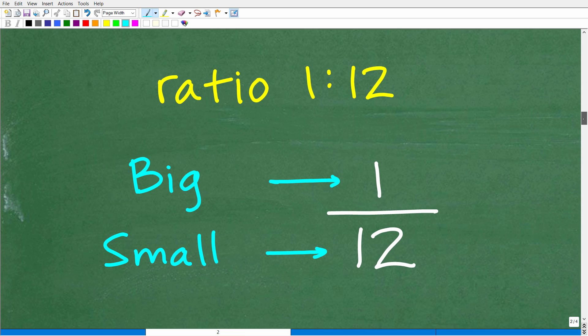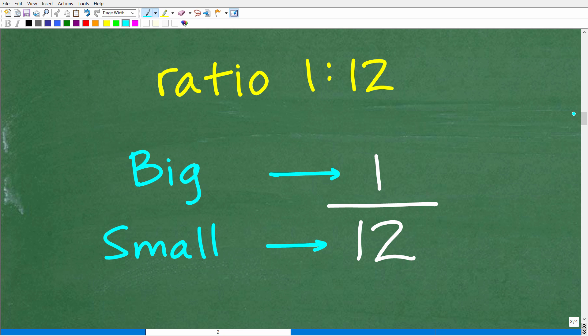Here is our ratio. We want to think about a fraction. What kind of fraction? We're comparing a big gear and a small gear.